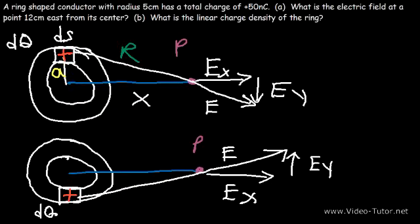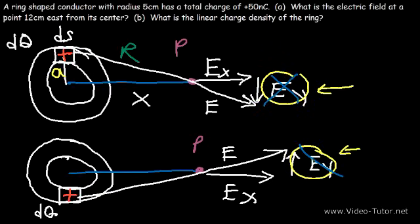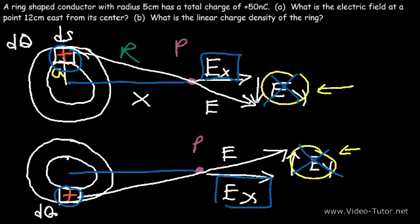Every segment of the ring produces an electric field at point P. Focusing on the top and bottom segments, they create Y components that are opposite in direction — one going down, one going up — so they cancel out. These two segments produce a net electric field only in the X direction, as the X components are parallel and additive. Similarly, left and right segments have Z components that cancel. Therefore, the net electric field at point P is directed only in the X direction due to the symmetry of the ring.